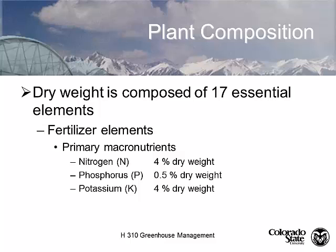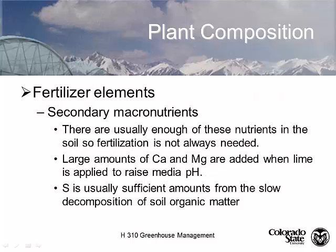Nitrogen, phosphorus, and potassium — we think of these as N, P, and K. All of our fertilizer proportions are based upon nitrogen, because nitrogen is used in the greatest volume and will therefore be used most quickly and become deficient first. Nitrogen is 4% of dry weight, phosphorus is 0.5%, and potassium is 4% of the dry weight of a plant.